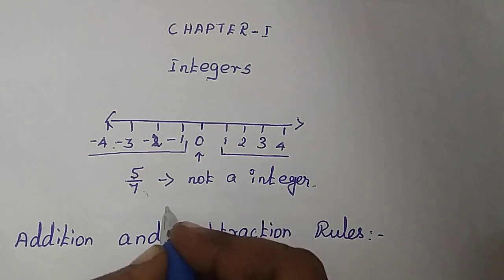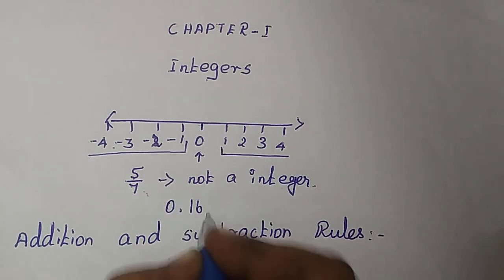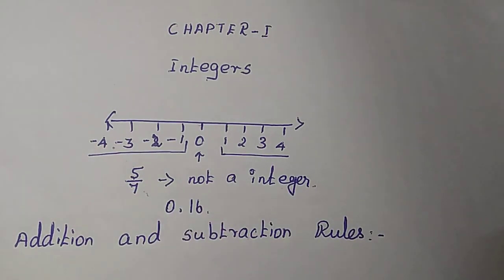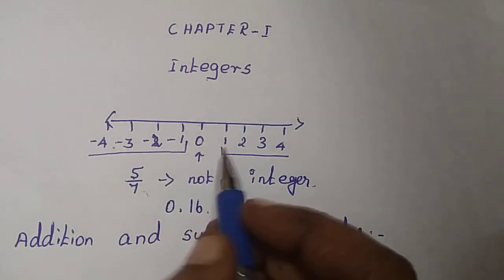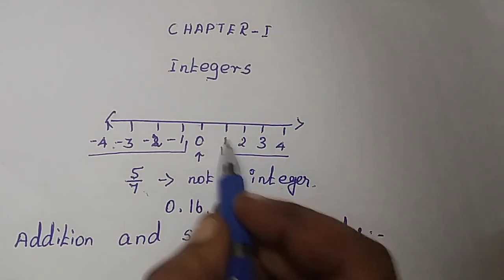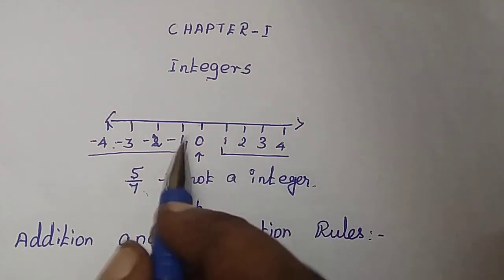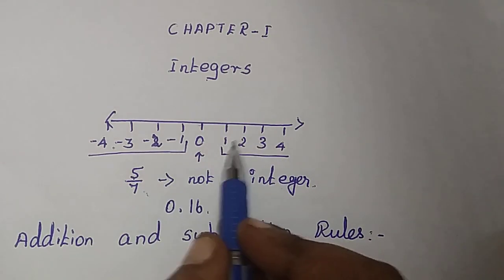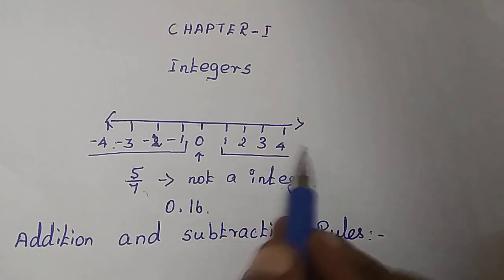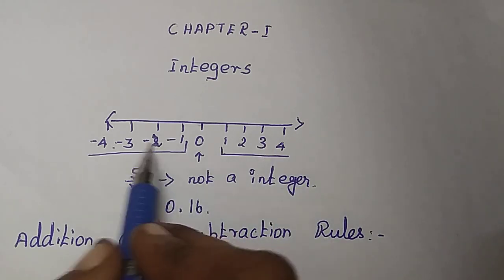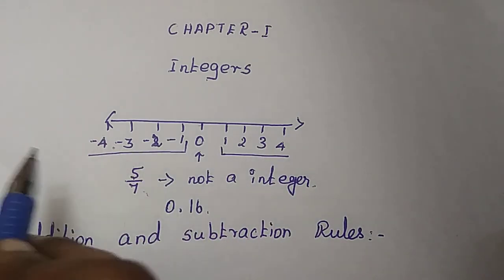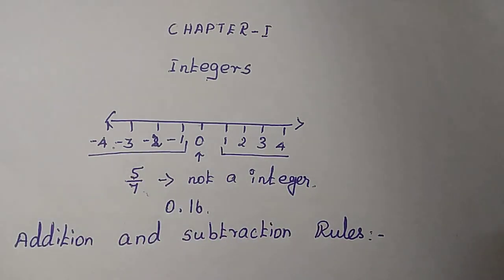0.16 — it is also not an integer. We know whole numbers are called integers. 1, 2, 3, 4, 0, minus 1, minus 2, minus 3 and so on is called an integer.